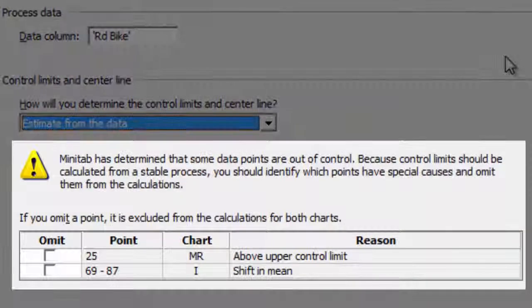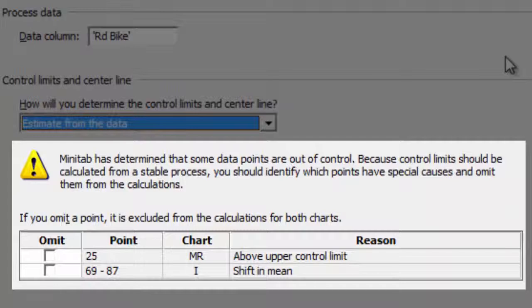The Assistant automatically reviews your data for out-of-control points. If one of these points has a special cause, such as an equipment failure, you can tell the Assistant not to use it when calculating the control limits. The Assistant has flagged several points in this data.